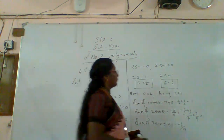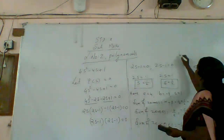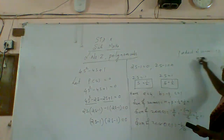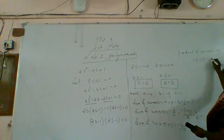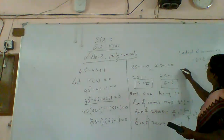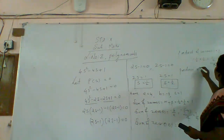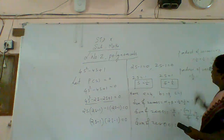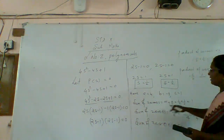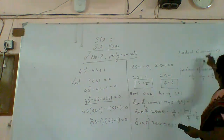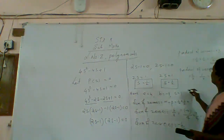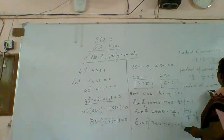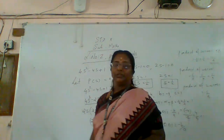Next we find the product of zeros. Alpha beta equals one by two into one by two, that is equal to one by four. Now by formula, product of zeros: alpha beta equals c by a. C is one and a is four, so c by a equals one by four. This method also gives one by four. Therefore product of zeros is equal to c by a. This is the second sum.